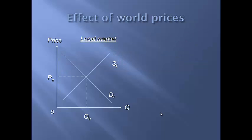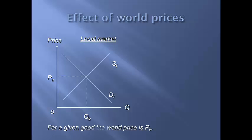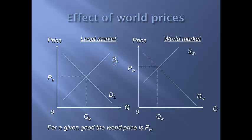Let's look at it diagrammatically. Here we have the local market, which is the Australian market. There's nothing else imposed on it — it's operating at PE price at the quantity demanded QE. For any given good, the world price is PW, which is shown in a demand and supply diagram next to the local one — that's the world market.